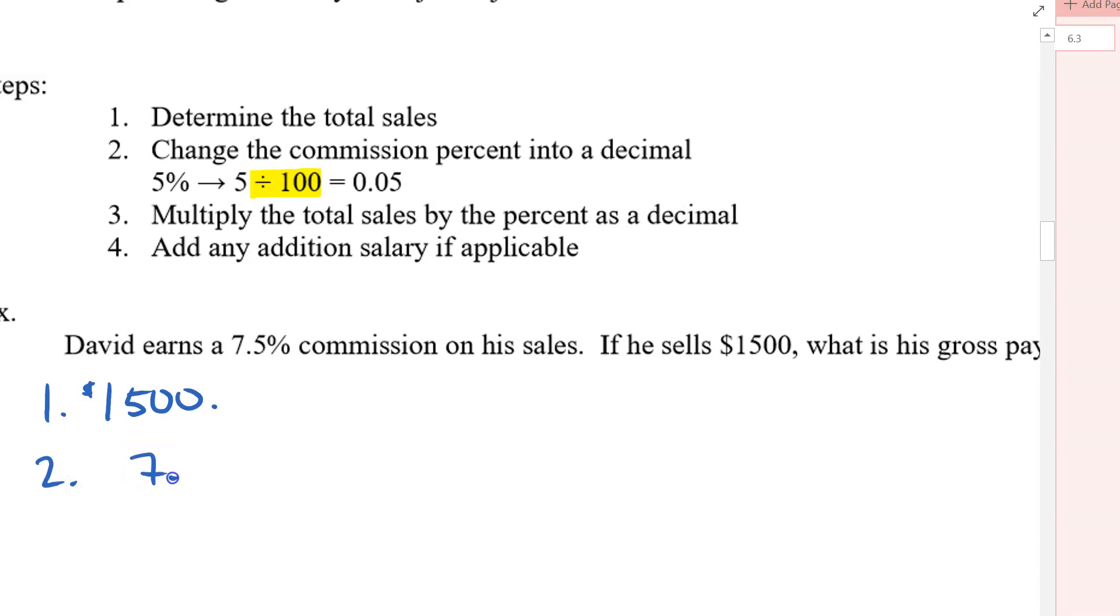Then number two, step number two was change the commission percent into a decimal. Okay, so in this case, it's 7.5. And then I'm going to say to change it into a decimal, I have to divide by 100. And that moves the decimal over two places. So I'm sort of thinking, it goes like once and then twice. So it's going to end up being 0.075 as a decimal.